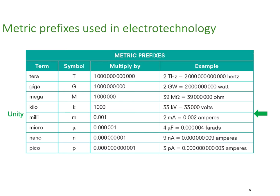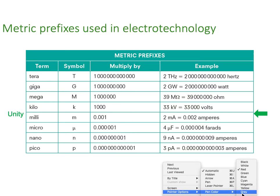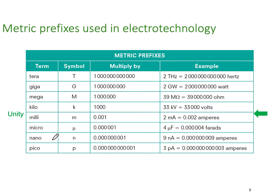So here's some metric prefixes that we tend to use in electrotechnology. I'm going to get you to look at the center of the table first. In the middle of the table, you'll see this word I've put in called unity. Right smack here across the middle is if we had a multiplier of one, and we call that unity.